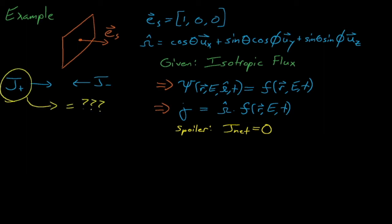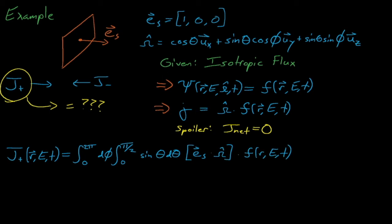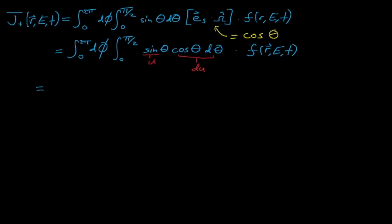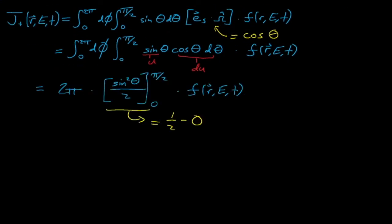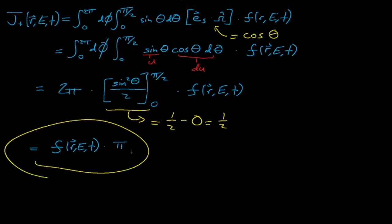Because our surface faces the positive x direction, the E sub s vector equals (1,0,0), which means that E_s dot omega simply equals the cosine of theta. From here we can carry out the integration, and soon we find that the positive net current equals the function f times π.